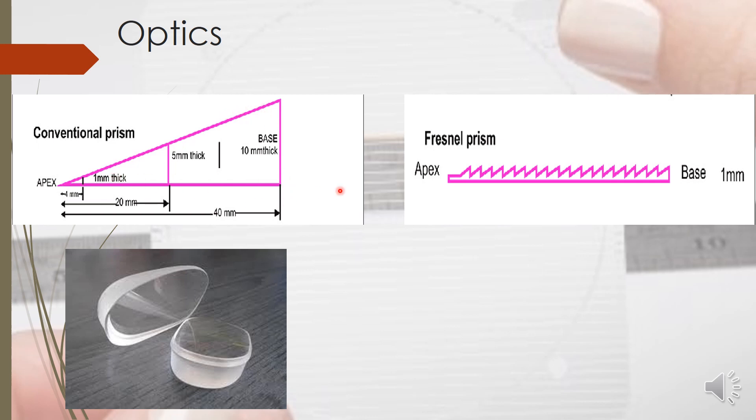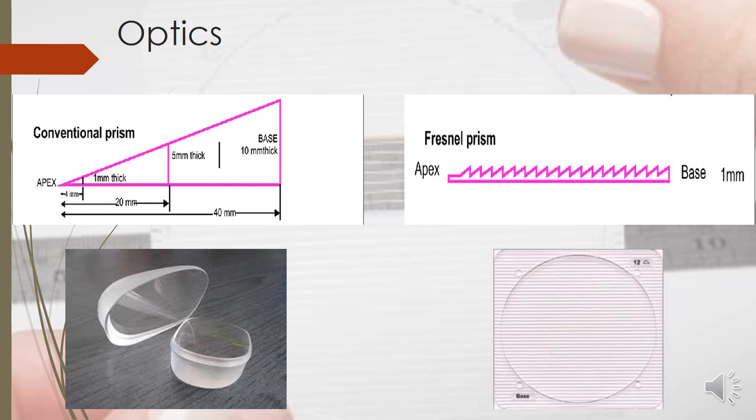The advantage is a conventional prism would be quite thicker at the base and thinner at the apex, so it would be bulky and thick, whereas a Fresnel prism is only one millimeter thickness. Even at the apex or base, it is hardly one millimeter in thickness and still gives you the same amount of prismatic effect. Also, because it is made of polyvinyl chloride, it is quite flexible and easy to use.